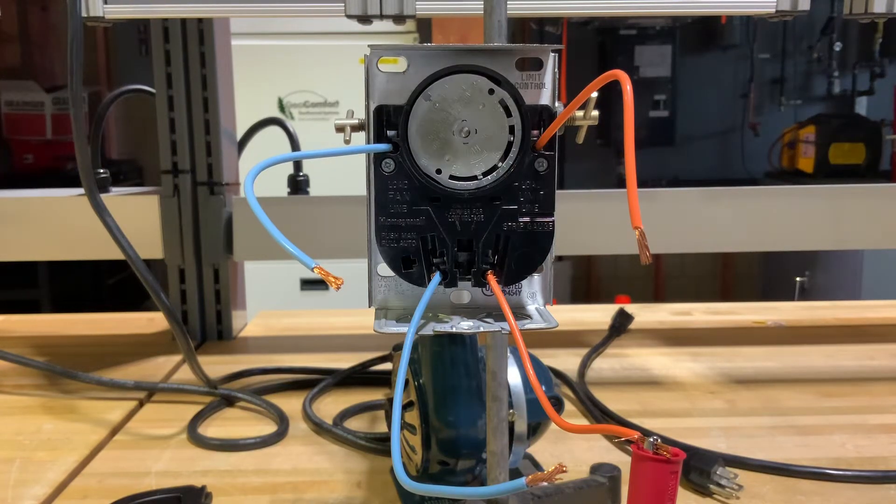Today we're going to talk about the fan limit control. We'll see these on oil furnaces. It's a safety that checks for a high heat situation and controls when that fan will turn off and on.